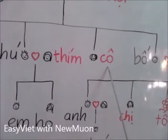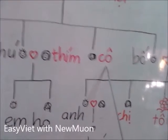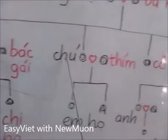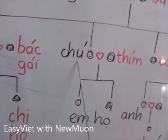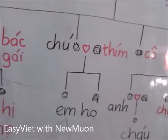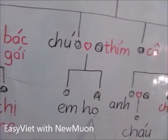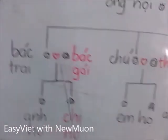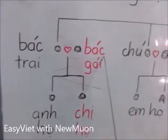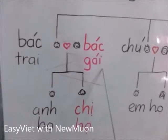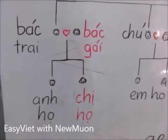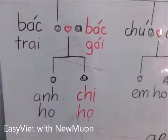My father's sister is Cô, no matter if she's older or younger than him. The younger brother of my father is Chú, and his wife is Thím. Their children are called Anh or Em. The older brother of my father is Bác, and his wife is also Bác. The son is Anh Họ and the daughter is Chị Họ.